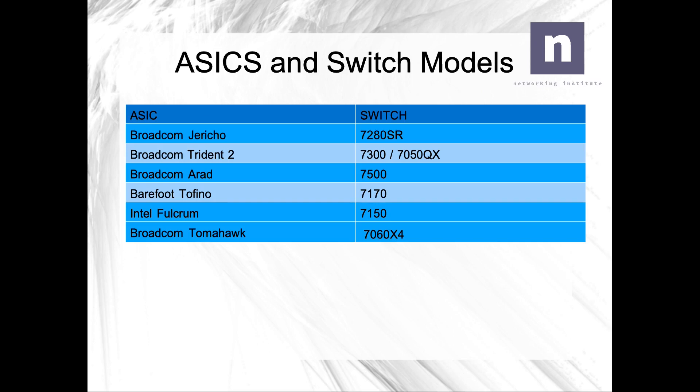In the previous video we compared and contrasted Merchant Silicon and Custom ASICs, and mentioned how Merchant Silicon ASICs is central to Arista's switching strategy. This slide shows a broad cross-section: Broadcom Jericho in the 7280SRs, Broadcom Trident II in the 7300 and 7050QX, Broadcom Arad in the 7500, Barefoot Tofino in the 7170, Intel Fulcrum in the 7150, and Broadcom Tomahawk in the 7060X4.